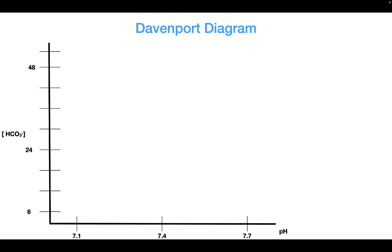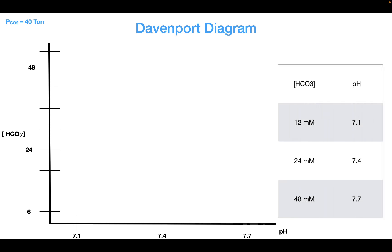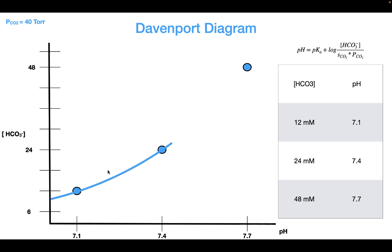Let's start off by assuming that we have a partial pressure of CO2 equal to 40 Torr. When we do that, we can see the pH of a solution depending upon the concentration of bicarbonate in it, and we can do that by using the Henderson-Hasselbalch equation. When we graph all of these values on the axes here, what we see is a curve like this.